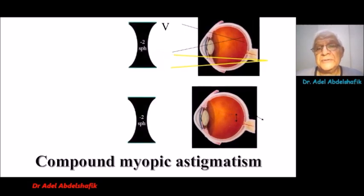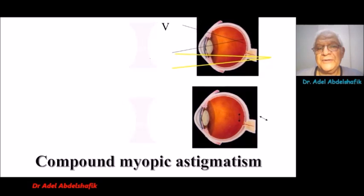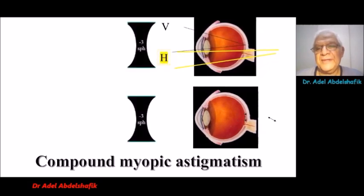The horizontal is behind the retina. And the circle of least confusion is on the retina. If we put another power, minus 3, everything is pushed further back.